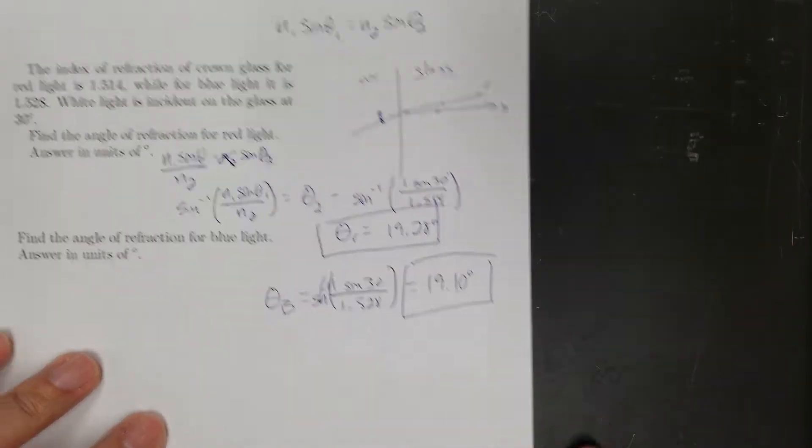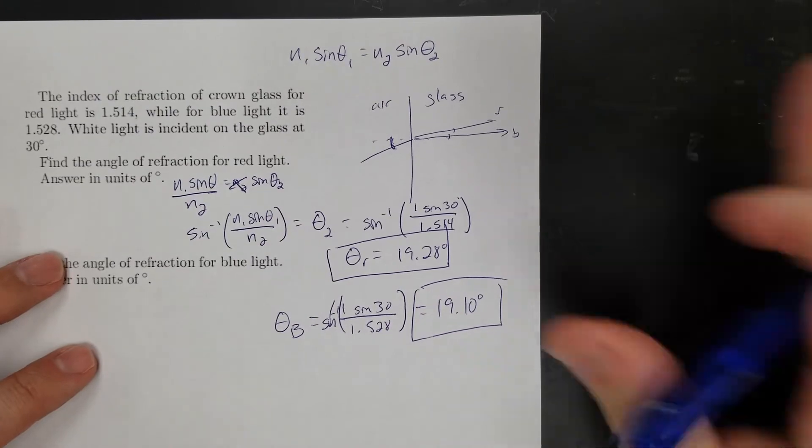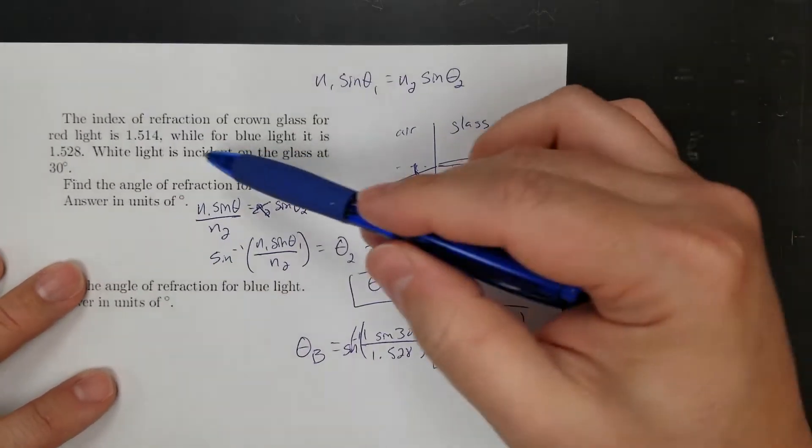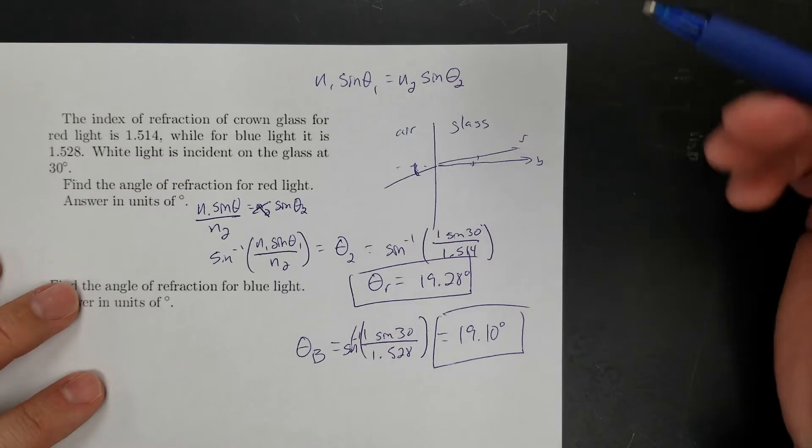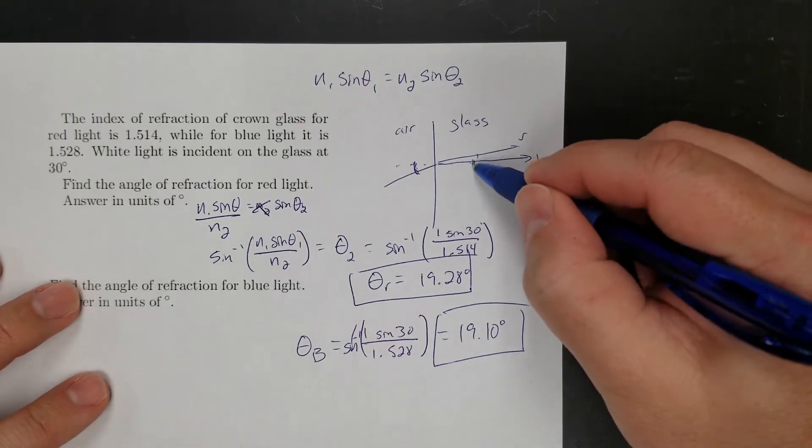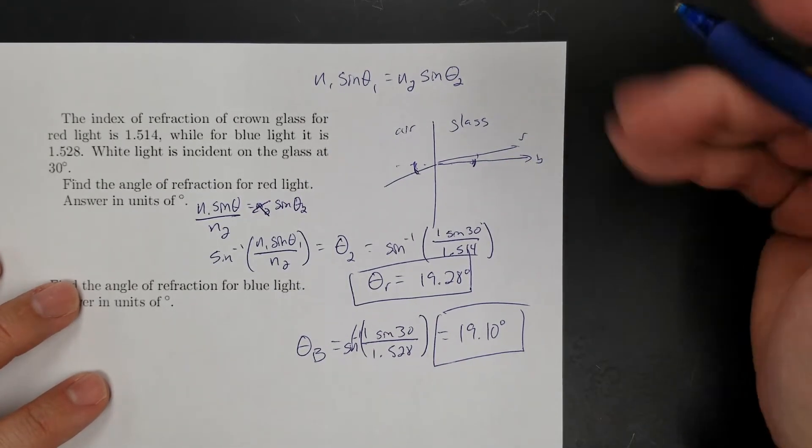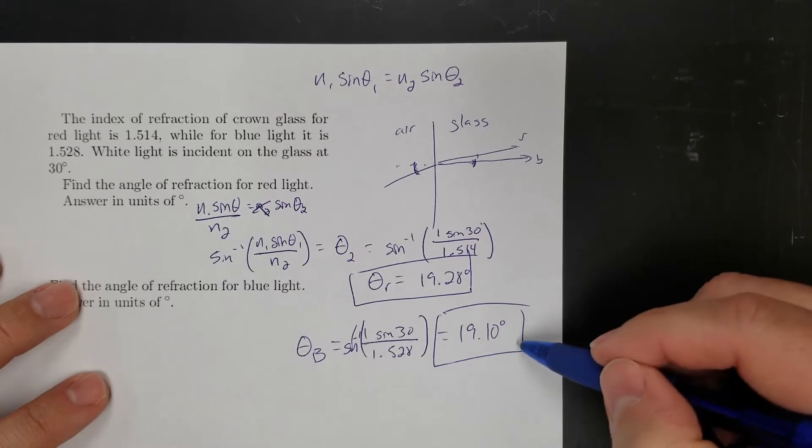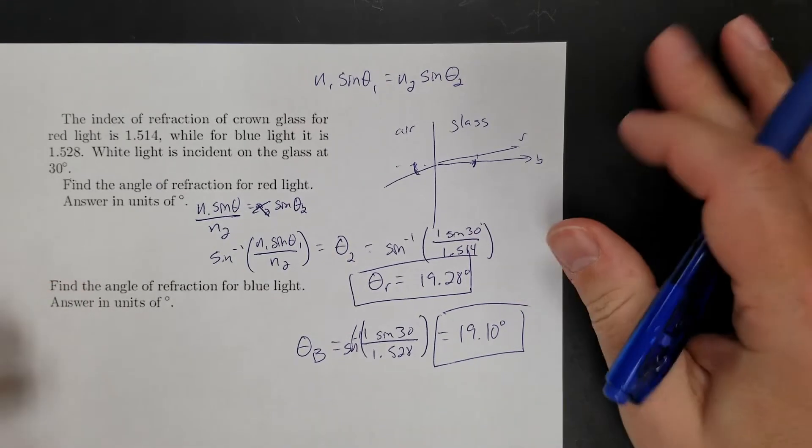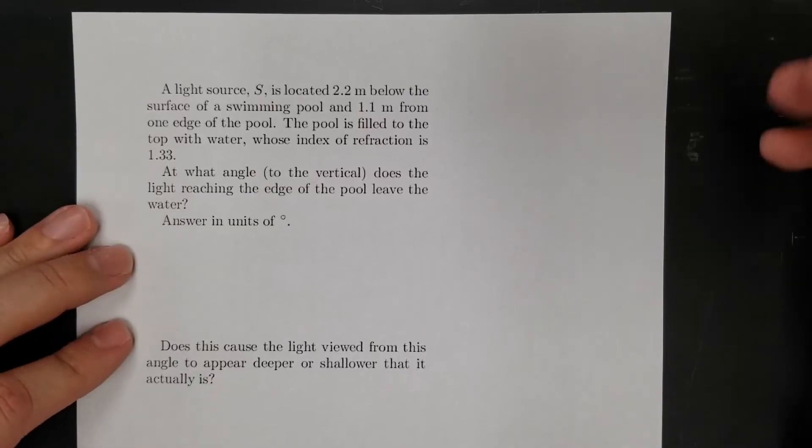And so that makes sense to me, because I'm saying that blue has a bigger index of refraction. So the blue light should bend more, which means that angle of refraction should be closer to the normal, which it is. It's a smaller angle than red. So it works out. Okay, so next one.